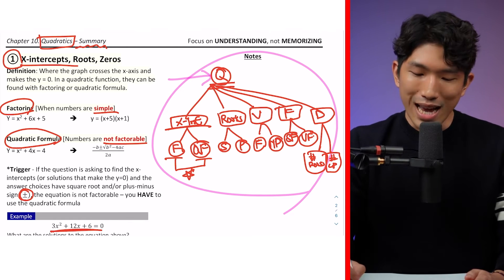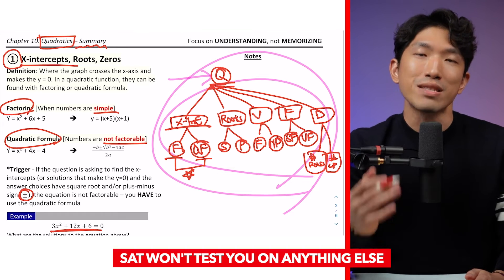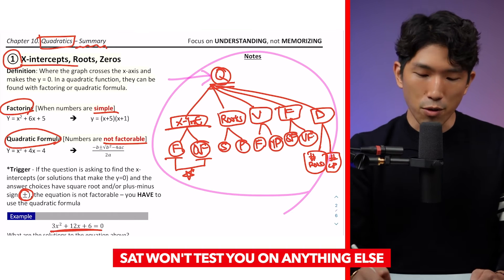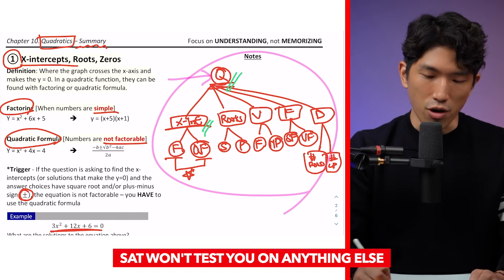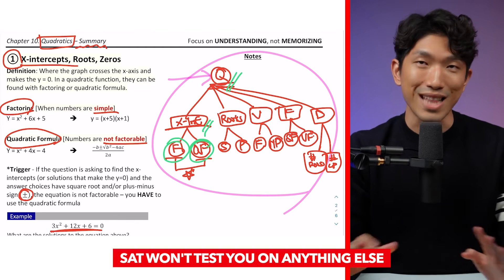Because when it comes to quadratics question on the SAT, whenever it comes to parabola, it's going to fall under one of these five different types. So if you see a question testing you on quadratics and it's testing you on the x-intercepts, it's either going to be based on factoring or quadratic formula. It's that simple.